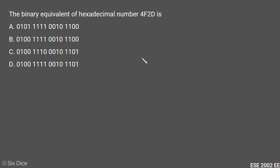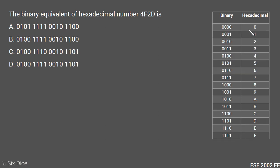In this question we need to convert a hexadecimal number into its equivalent binary number. We can see in this table that every hexadecimal digit can be represented as a 4-bit binary number. Our given hexadecimal number is 4F2D.